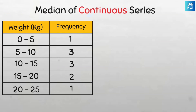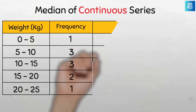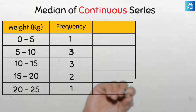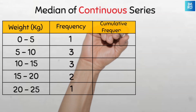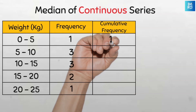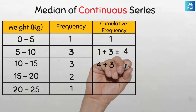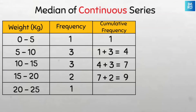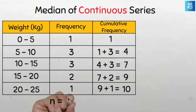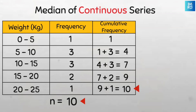To find the median for continuous series data, we first compute the cumulative frequency just like we did for discrete series data. The cumulative frequency column gives us: 1, then 1+3=4, then 4+3=7, then 7+2=9, then 9+1=10. The last cumulative frequency equals the total of all frequencies — 10 — confirming we have 10 children, so our n is 10.